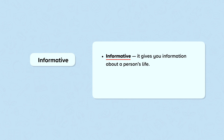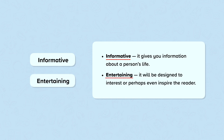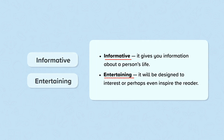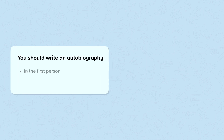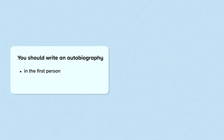What's the purpose of an autobiography? An autobiography may be informative, as it gives you information about a person's life. It will often be entertaining, and it will be designed to interest or perhaps even inspire the reader. You should write an autobiography in the first person, using the pronouns I or we, and you should write an autobiography in the past tense.